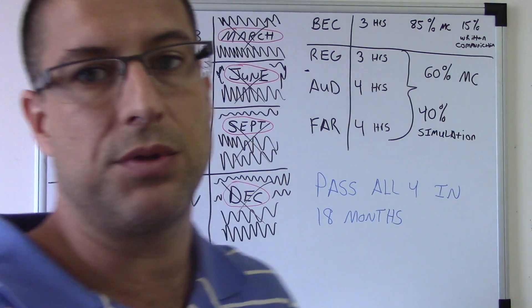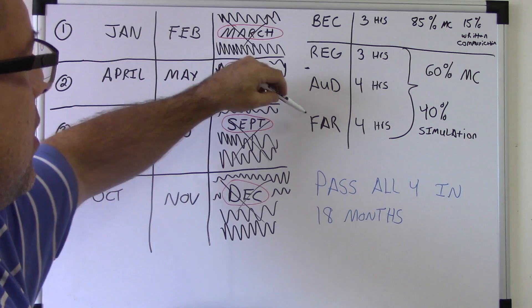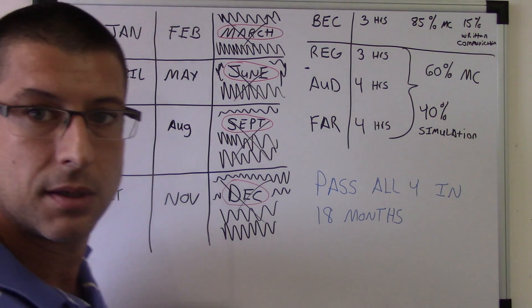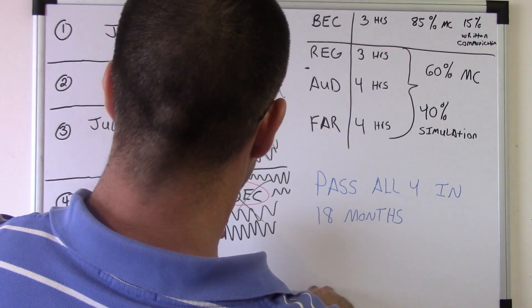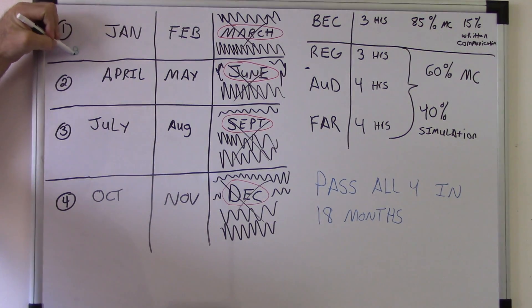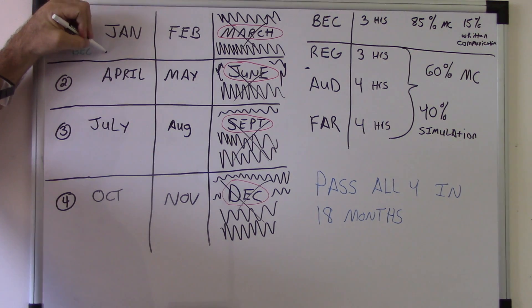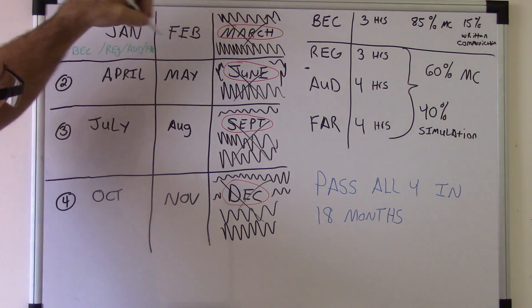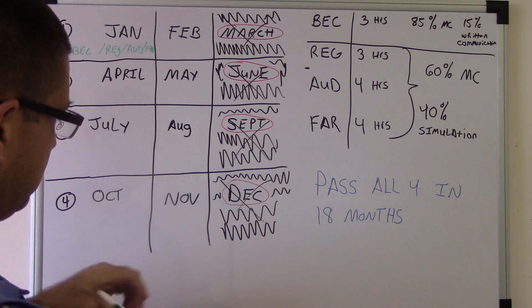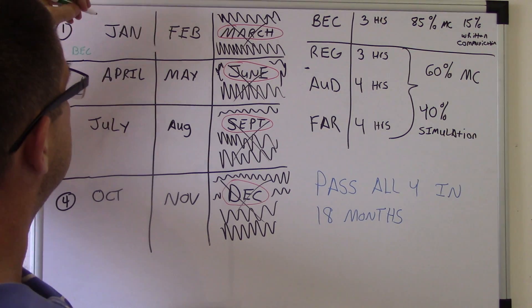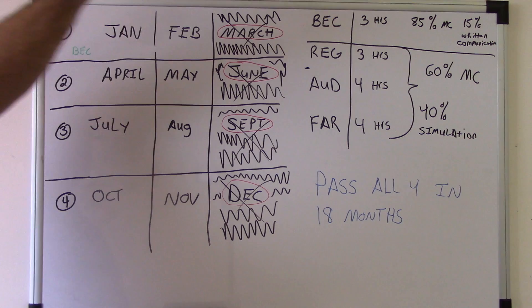And one additional thing is you can only take each exam per window. Like you could take, let me get a different color here. So anyways you can take, let's say in the first testing window, you can take BEC in January, you can take REG in January, you can take audit and FAR, and you can take them all the same month. Obviously you just can't do, you can only do one section per window.